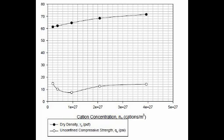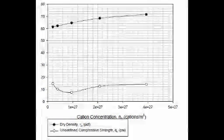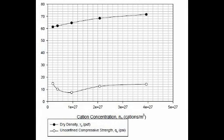This is a plot of the dry density and unconfined compressive strength versus cation concentration. The dry density continually increases with increasing cation concentration, and the unconfined compressive strength takes a small dip, but then increases and levels out at about 14 psi.